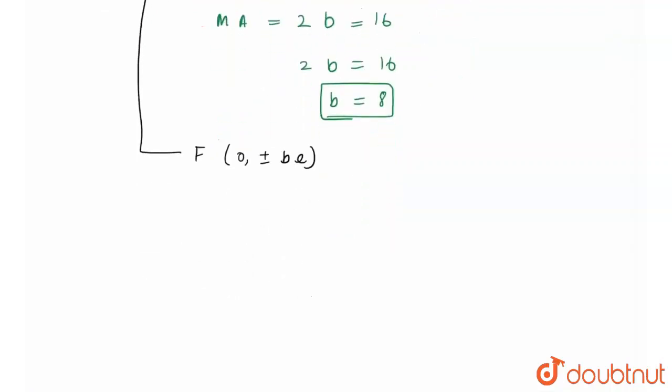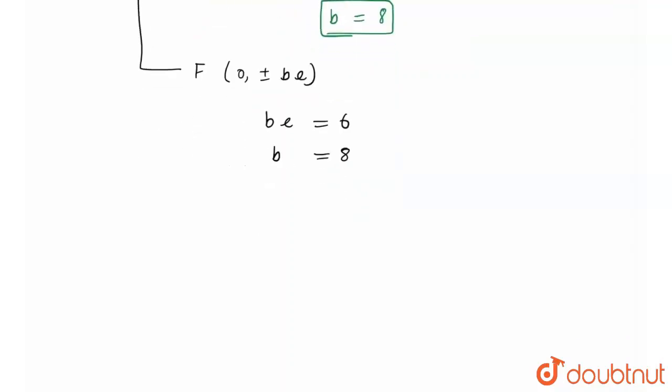Therefore I can say, by comparing this foci with the actual foci, that be = 6. And here b = 8, therefore I can easily find the value of e that would be equal to 6/8, or I can say that would be equal to 3/4. Therefore eccentricity is equal to 3/4.